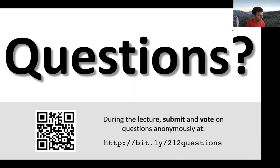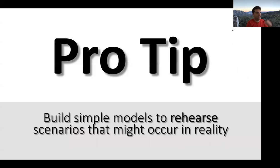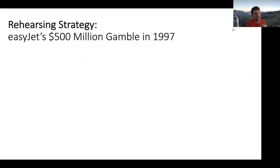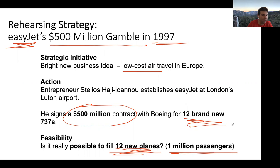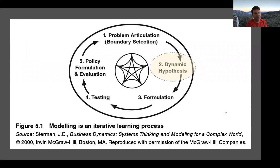Another tip I want to mention is how to use these models to rehearse scenarios and strategies, and that comes up in the EasyJet example. EasyJet is a budget airline that invested 500 million dollars in 1997 — a real gamble, because the idea was that they needed low-cost air travel, but in order to do that they needed to buy a bunch of new airplanes and fill those planes quickly enough with one million passengers to recoup this giant 500 million dollar contract. The question is: are they going to be able to do that, and how can we imagine threats to this particular idea? We need to form a dynamic hypothesis that we can do in our modeling.